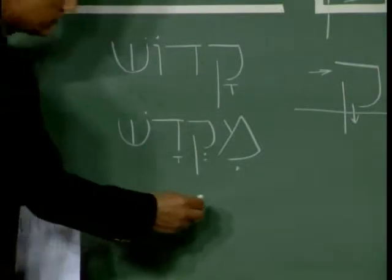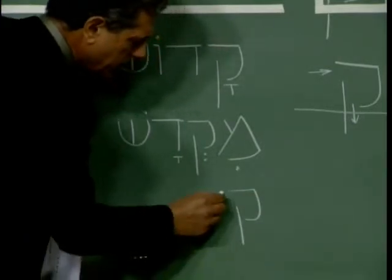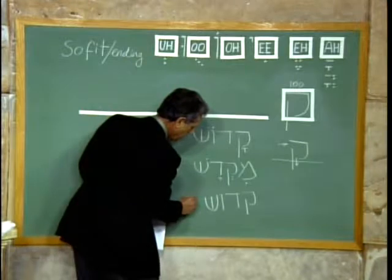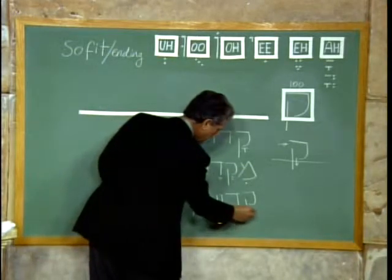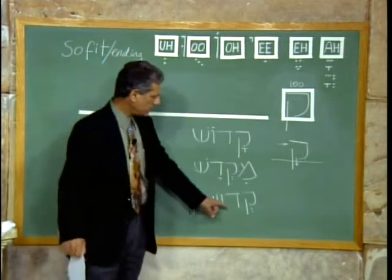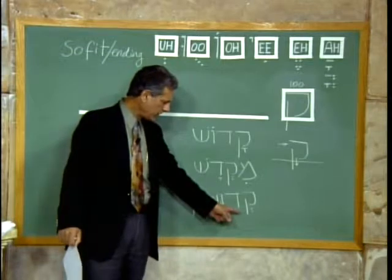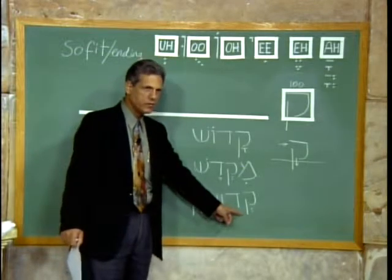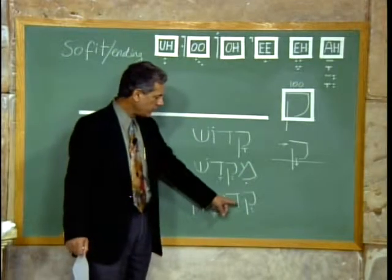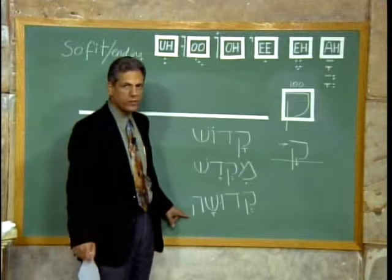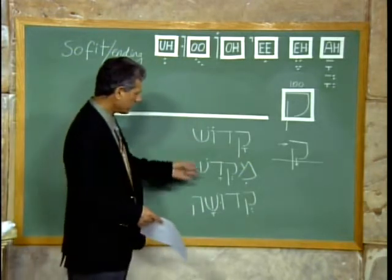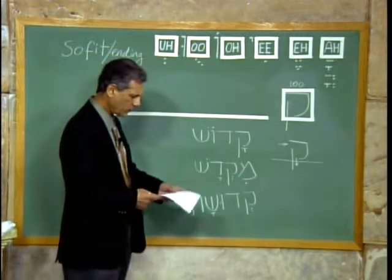Another word that goes with it: Kuf, Dalet, Shin, and a He. Here is the letter Kuf with an A sound — Ka. Then Dalet and a Vav with a dot in the middle, which produces the U sound. We have Ka — Du — Shin with an A sound — and a He with no sound. Kedushah. Holiness. All of these words come from Kadosh and they all imply holiness.